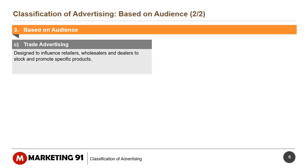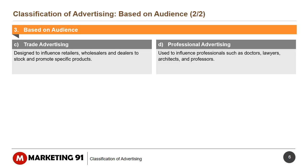The third sub-classification within based on audience is trade advertising, which is designed to influence retailers, wholesalers, and dealers to stock and promote specific products. Lastly, professional advertising is used to influence professionals such as doctors, lawyers, architects, and professors.